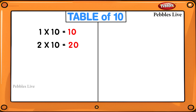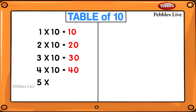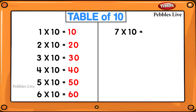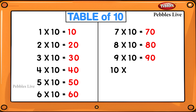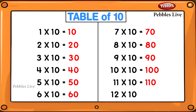1 ten is 10, 2 tens are 20, 3 tens are 30, 4 tens are 40, 5 tens are 50, 6 tens are 60, 7 tens are 70, 8 tens are 80, 9 tens are 90, 10 tens are 100, 11 tens are 110, 12 tens are 120.